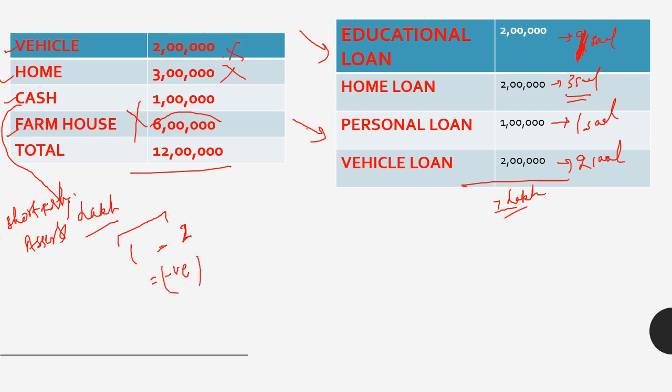From this you can understand: if a company has short-term liabilities greater than short-term assets, that company is in trouble. The net worth should be positive both in the short term and long term. Liquidity is about how quickly you can convert assets to cash — assets convertible within one year are liquid assets. If short-term assets are less than short-term liabilities, that is a liquidity problem.